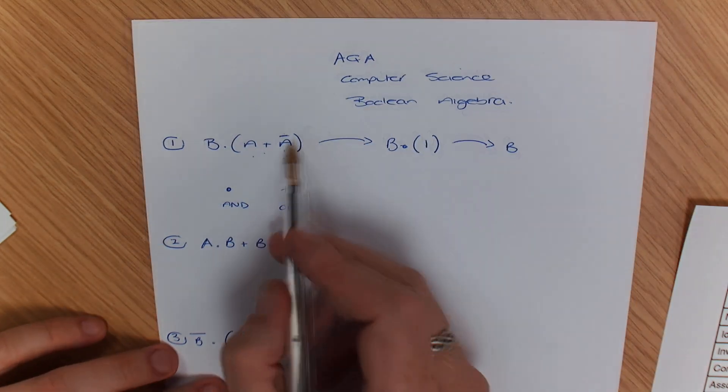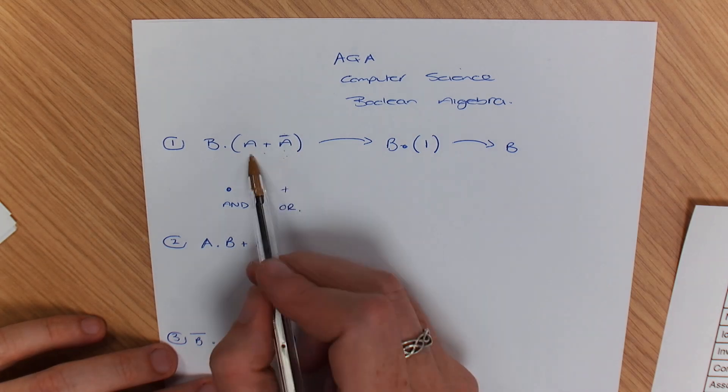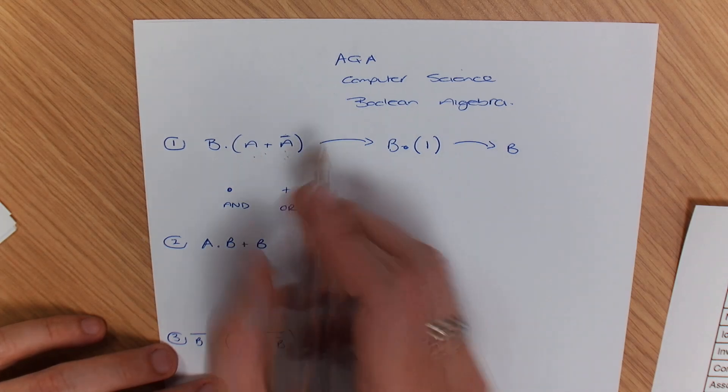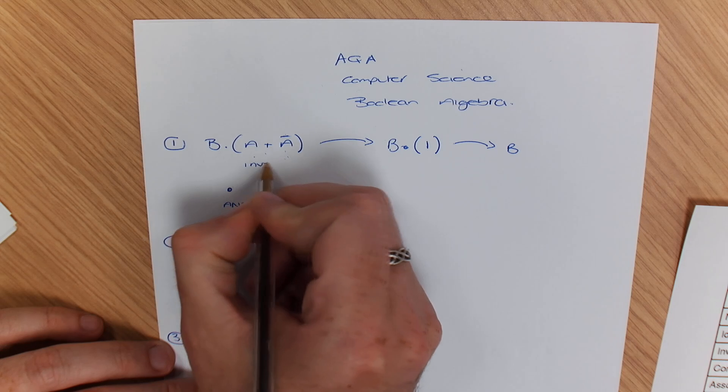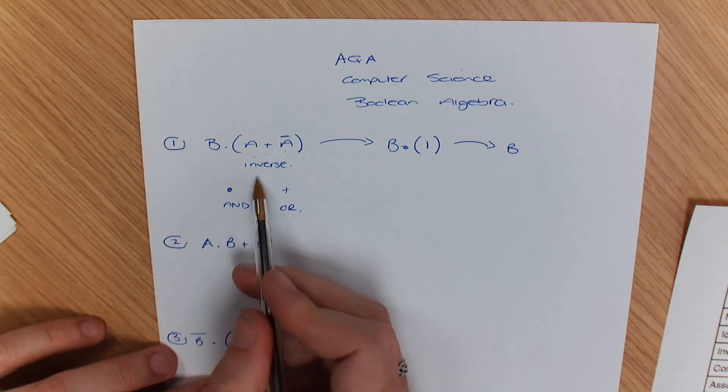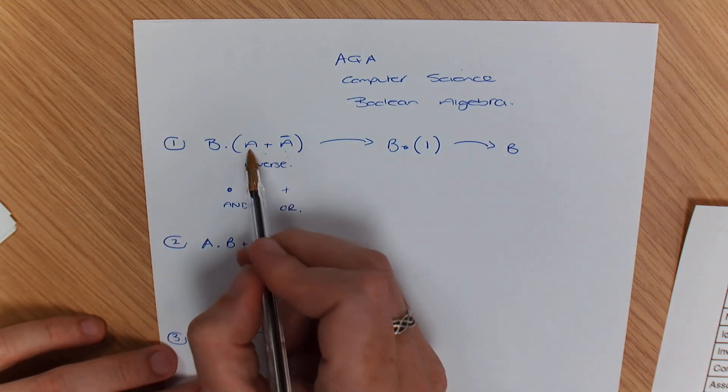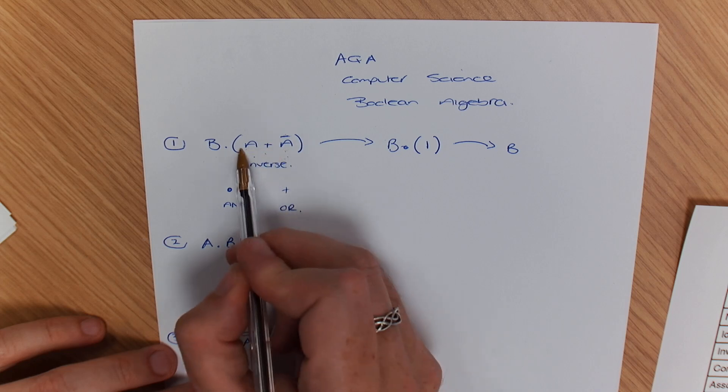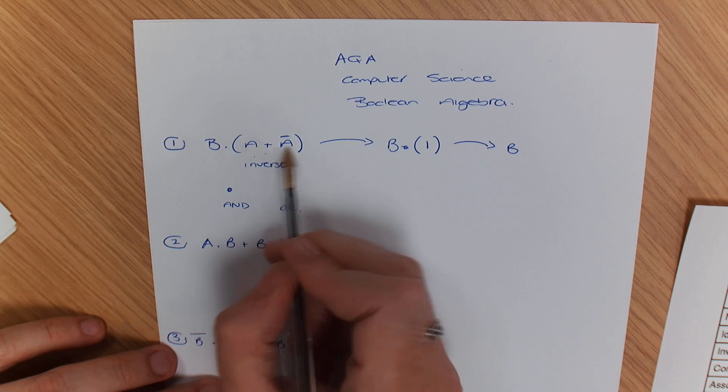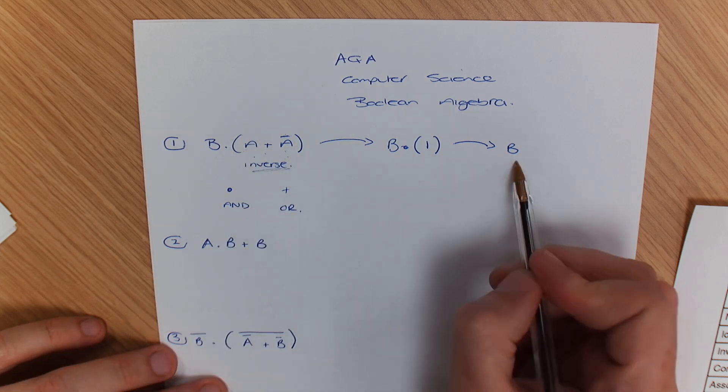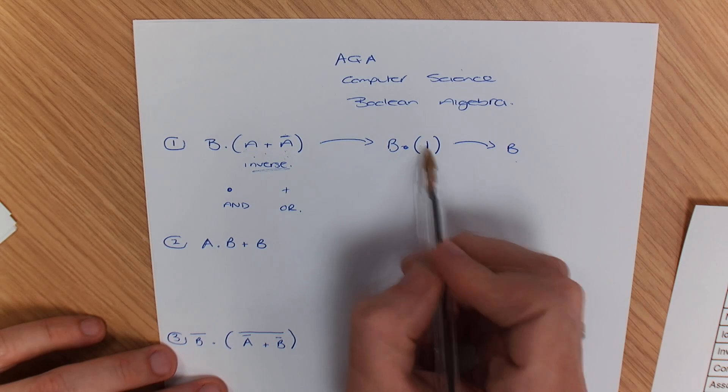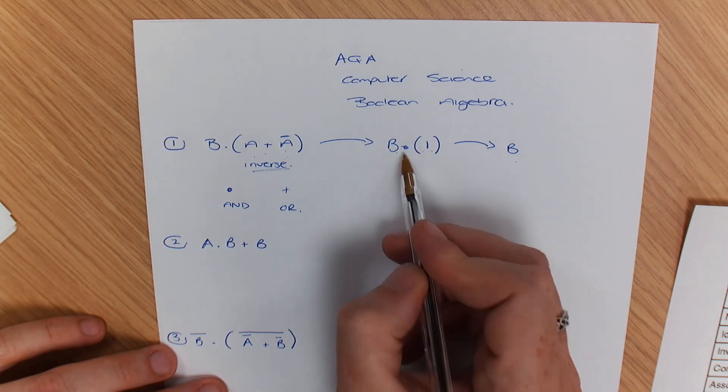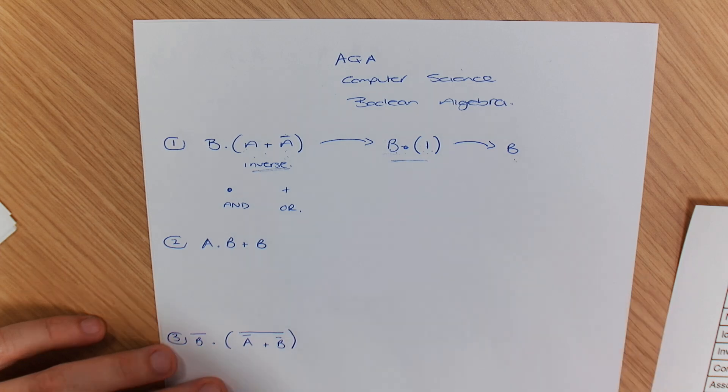That rule there was called the inverse law. So if you see a plus and an A with a not A or any letter, that's the inverse law and that's going to get you straight down to 1. But then when it is B and 1, the answer is always going to be B.